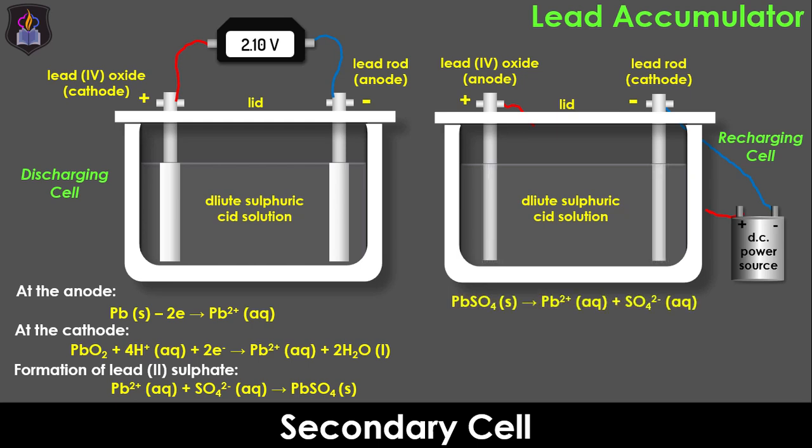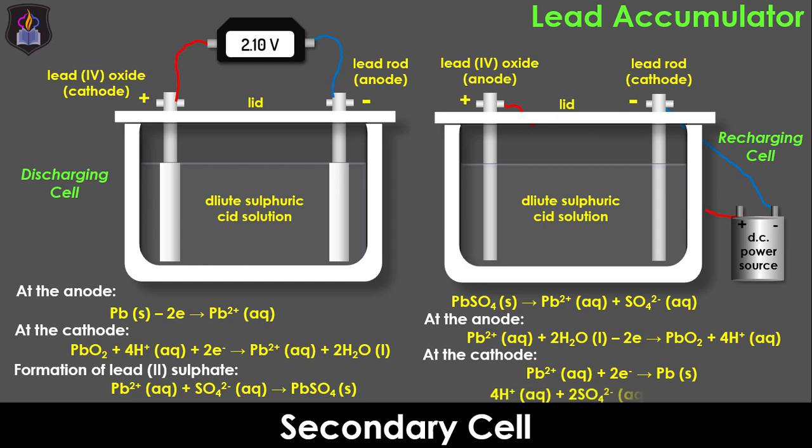At the anode, lead 2 ions from the lead 2 sulfate lose electrons and combine with water to produce lead 4 oxide and hydrogen ions. While the lead 2 ions at the cathode gain the 2 electrons and become reduced to metallic lead. The sulfate ions combine with the hydrogen ions to regenerate the sulfuric acid electrolyte.